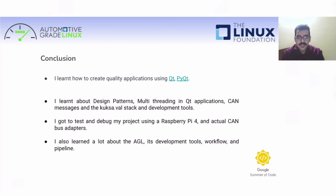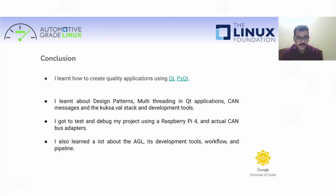In conclusion, I was able to learn about PyQt5 and Qt5 application development in general, design patterns, multi-threading in Qt applications, CAN messages, and the kuksa.val stack. I got to test and debug my application on real hardware — a Raspberry Pi 4 kindly provided by the mentors — along with actual CAN adapters. I learned a lot about the AGL community, its tools, the whole workflow and the entire pipeline. All in all it was a wonderful experience.